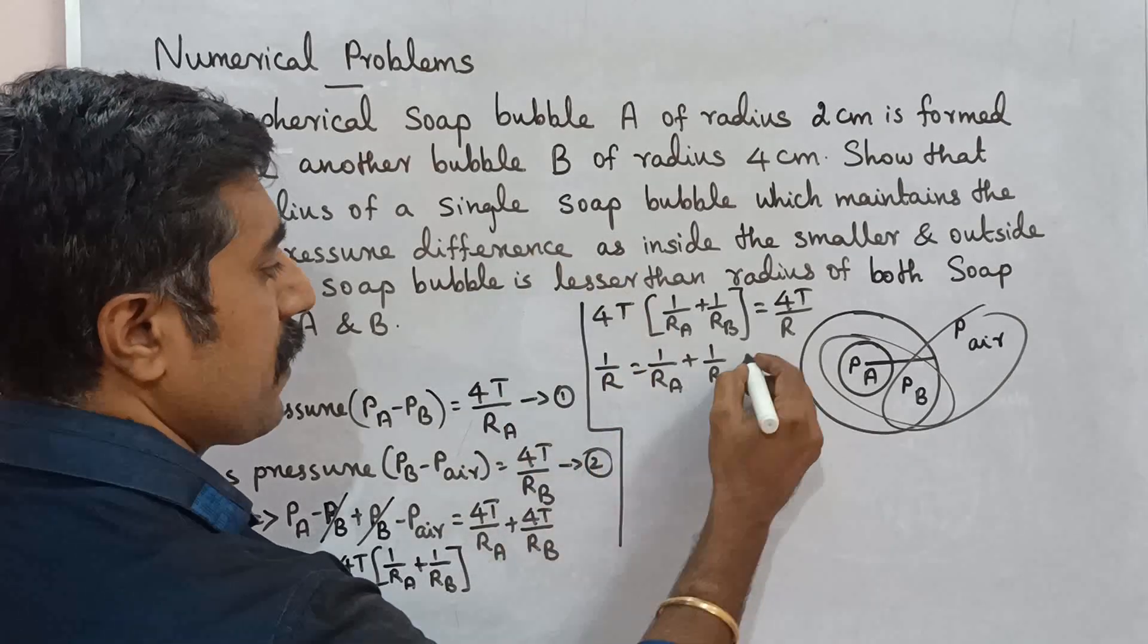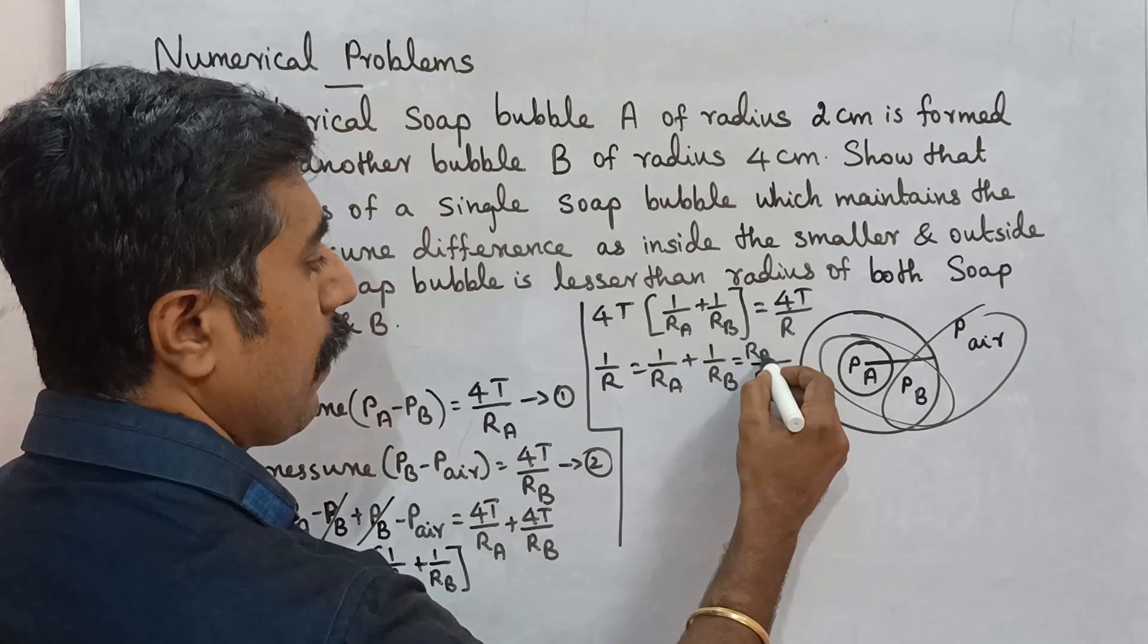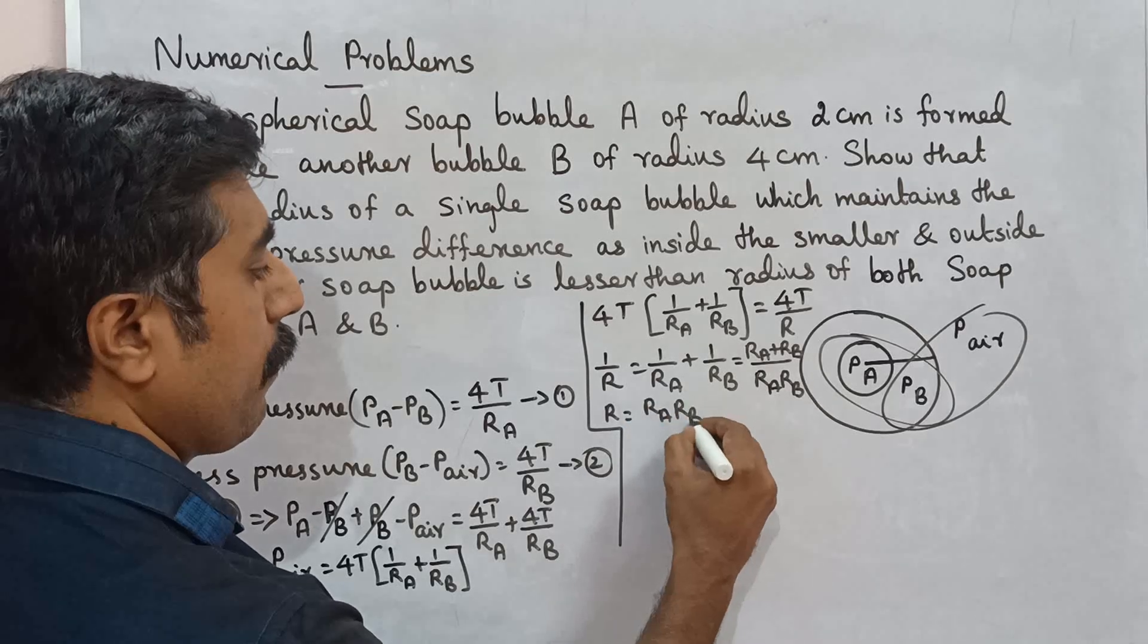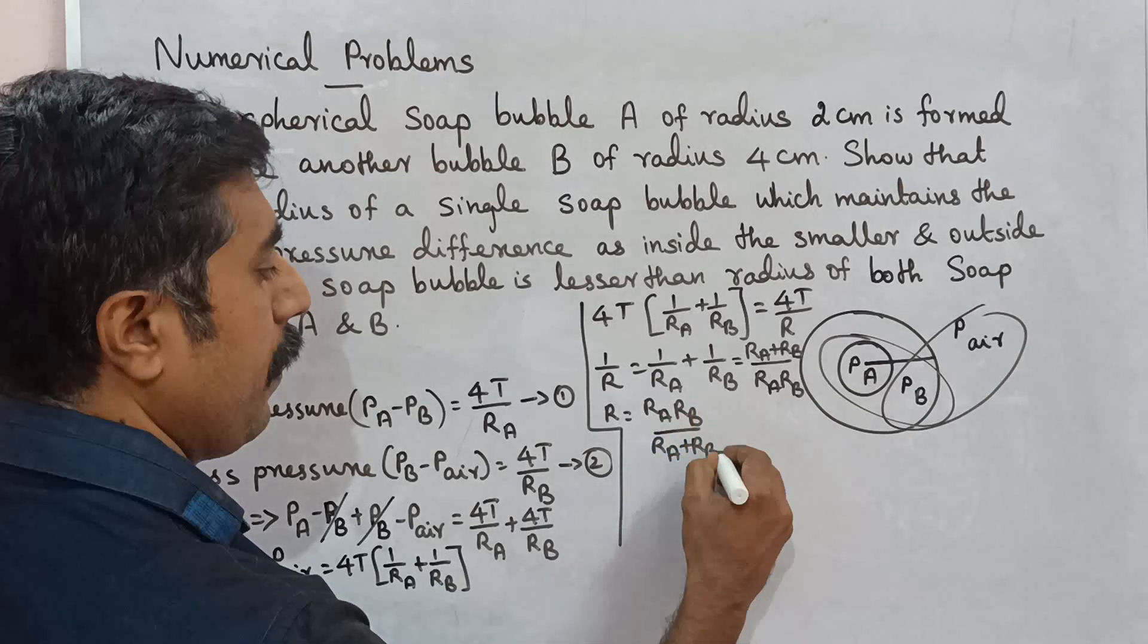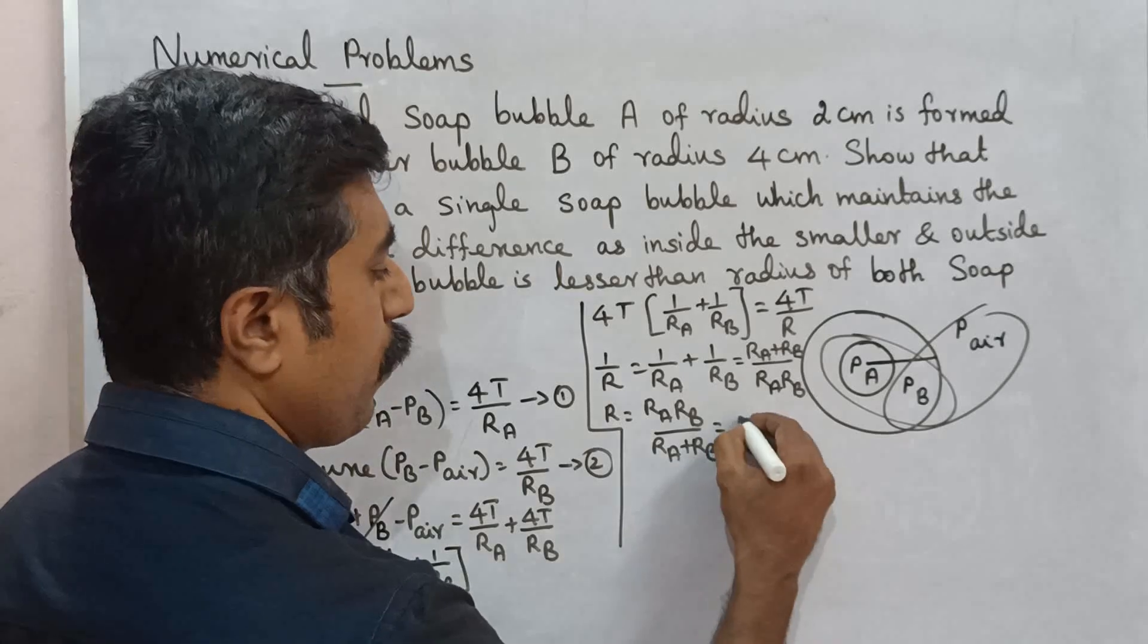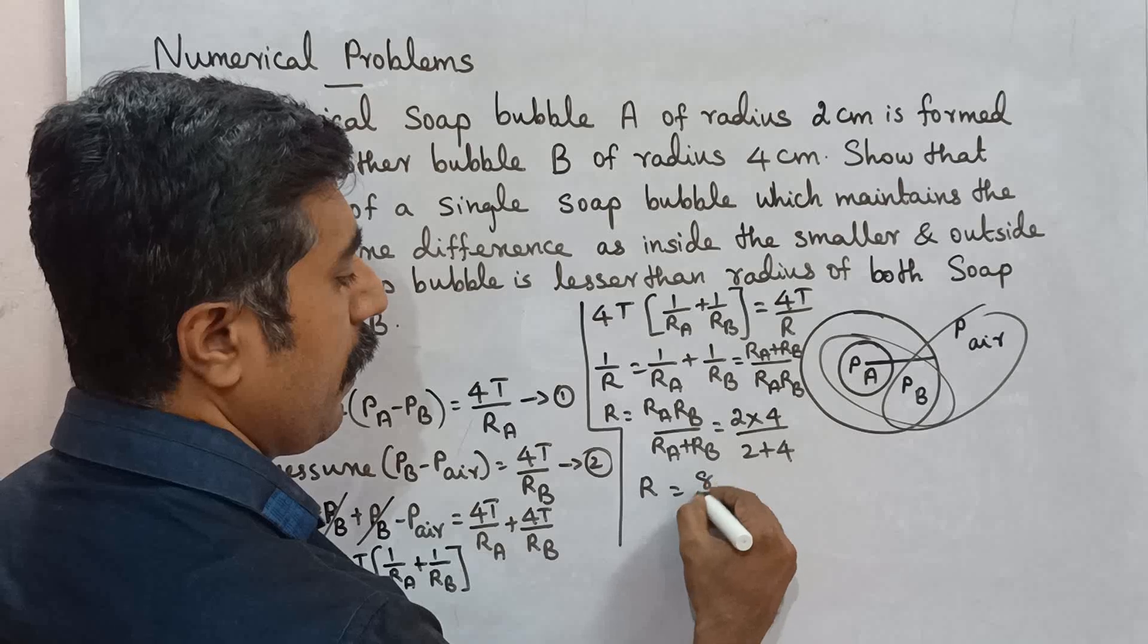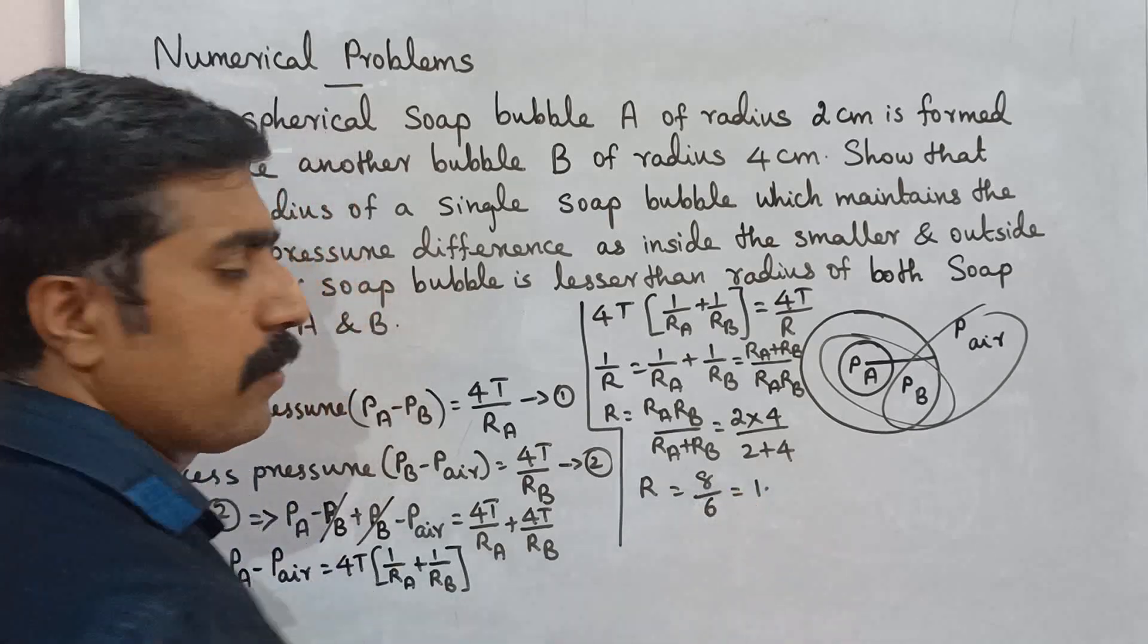Which is equal to Ra plus Rb divided by 2 Ra Rb. R equals 2 times radius of the smaller bubble, 2 cm, times radius of the bubble B, 4, divided by 2 plus 4. So R is equal to 2 into 4, 8, by 2 plus 4, 6. Divide: 1.33 cm.